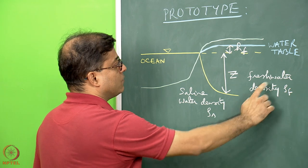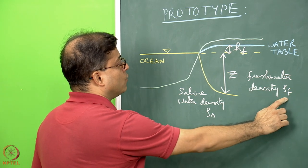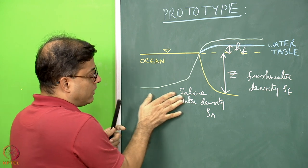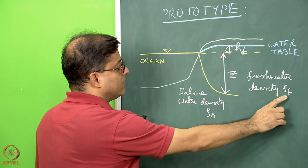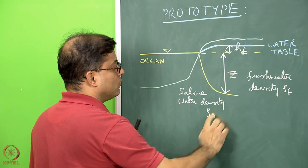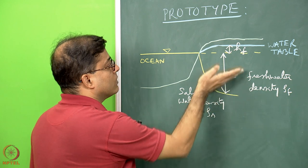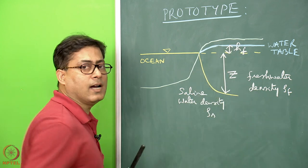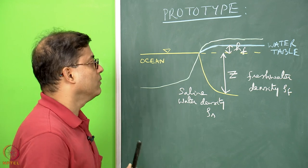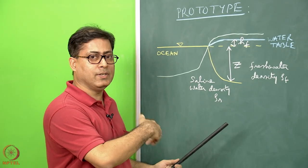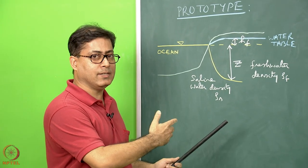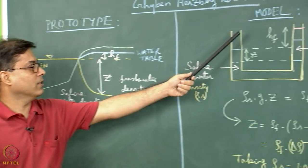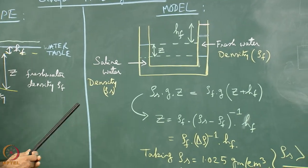There is already fresh water of density rho-f in the land part, and what happens due to the saline water intrusion is that the lower density rho-f — rho-f is less than rho-s — is pushed upward. Here hf is the increase in height of the water table. This situation can be represented in terms of a laboratory model, so from prototype to model there is a conversion.